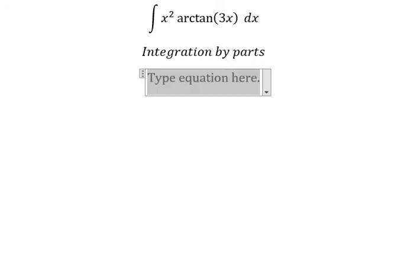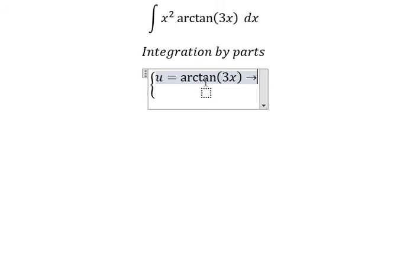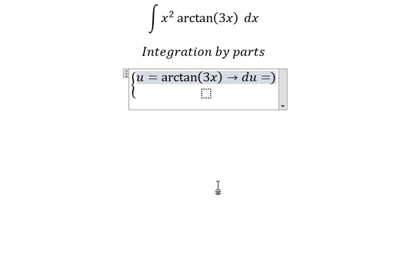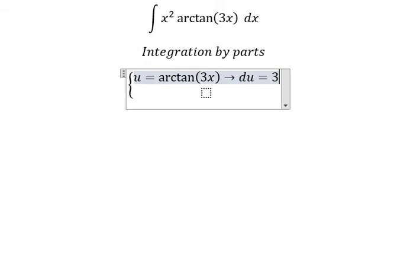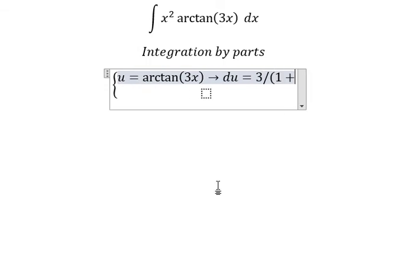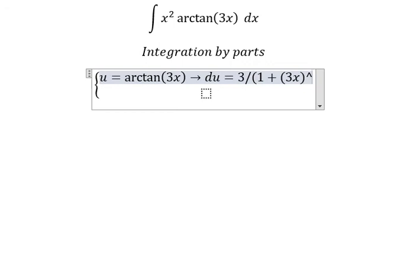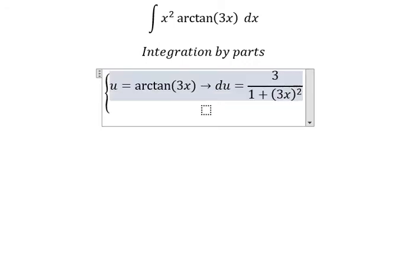So I will put u equals to arctan of 3x. So if I do first derivative for both sides, we have first derivative of arctan 3x. You got 3 over 1 plus (3x)² and we have dx.